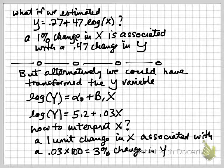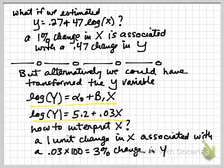Now, speaking of other log transformations, we could have transformed the y variable and turned it into the log of y and estimated a regression like this with specific numbers. Maybe we'd have the log of y equals 5.2 plus 0.03 times x. So how do we interpret the coefficient on x here? How do we interpret this 0.03 now?